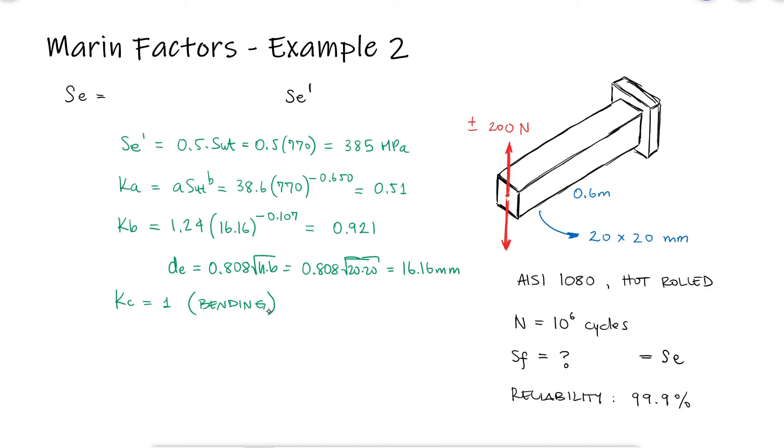The Marin Factor for a reliability of 99.9% is equal to 0.753. This means that the corrected endurance limit will use Marin factors for surface, size, loading, and reliability, which means that the fatigue strength for 10 to the 6 cycles is equal to 136.17 megapascals.